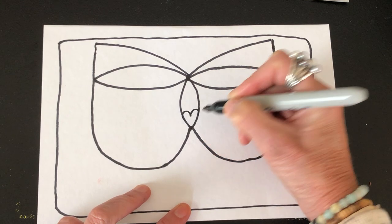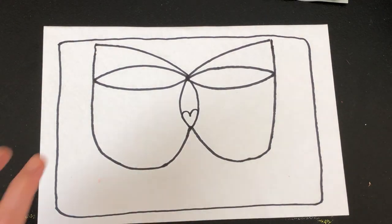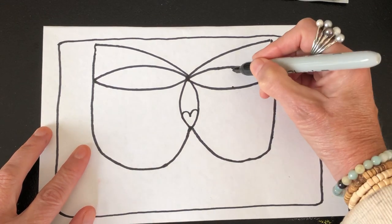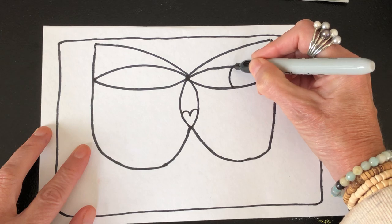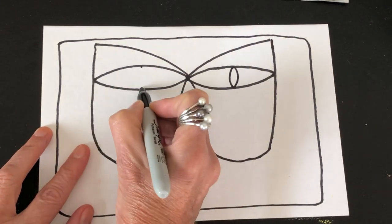And then the eyes - I'm gonna put a dot here and a dot here and a curve line here. Same thing for the other side: dot here, dot here.